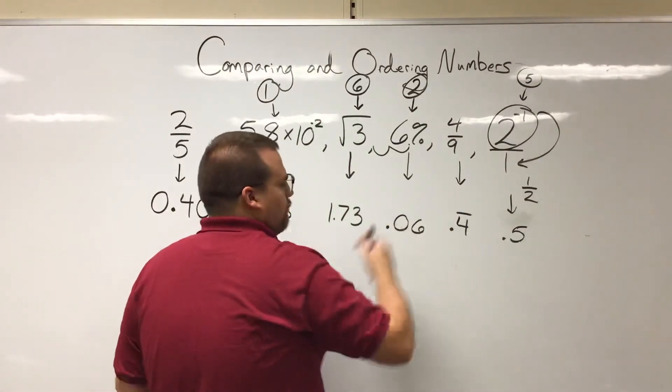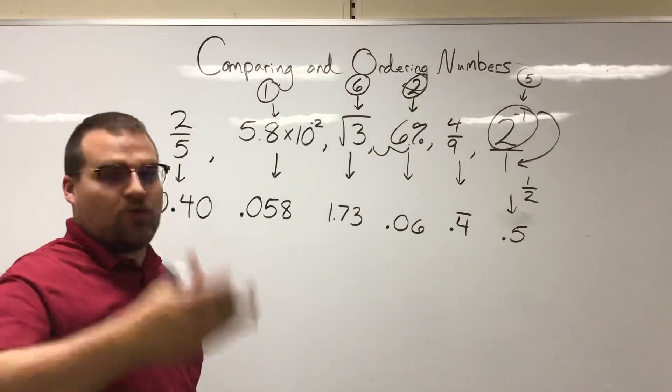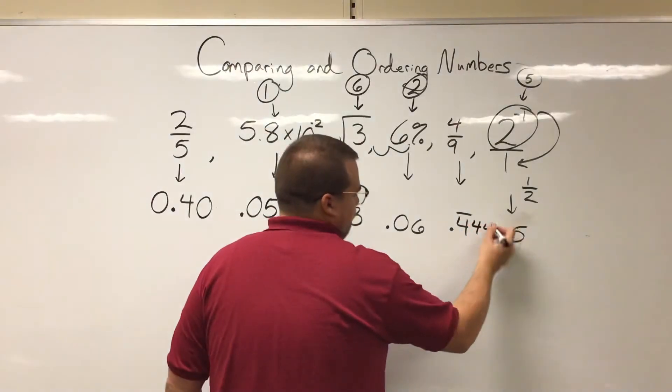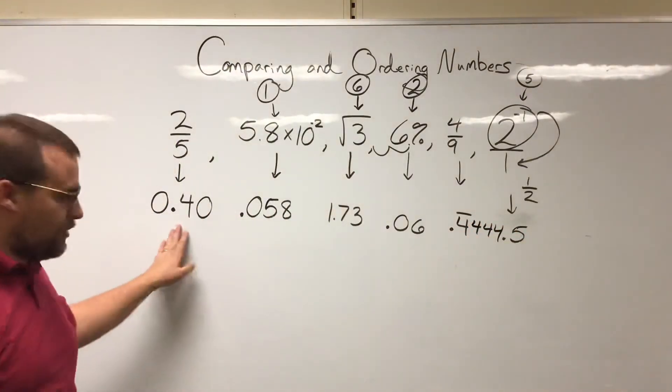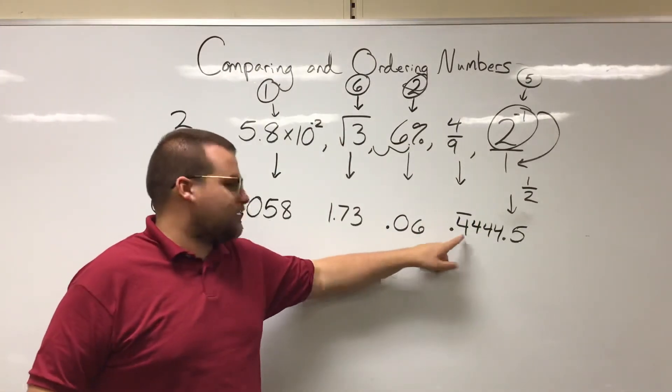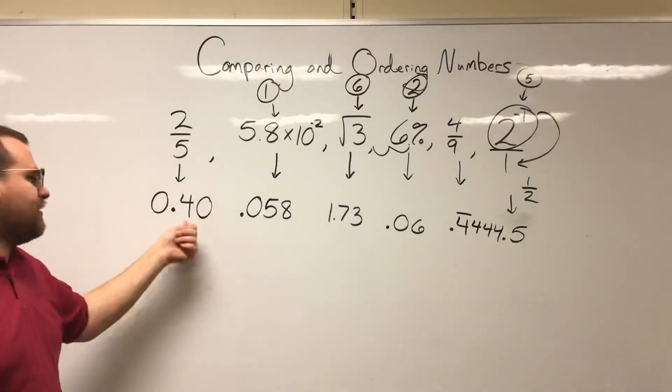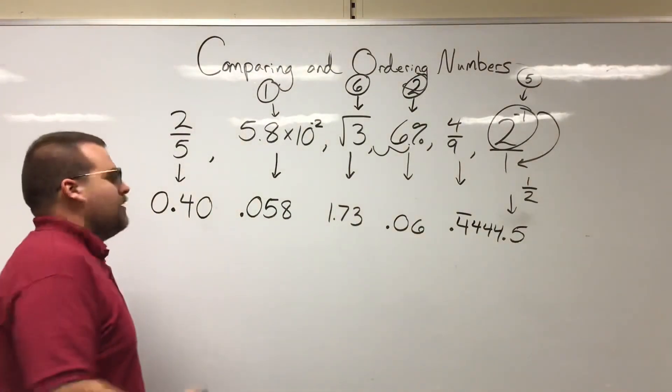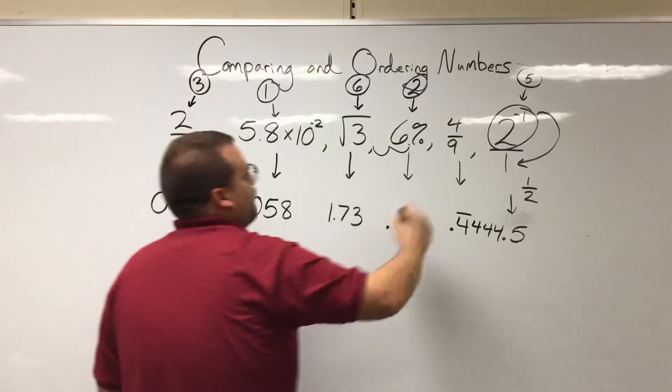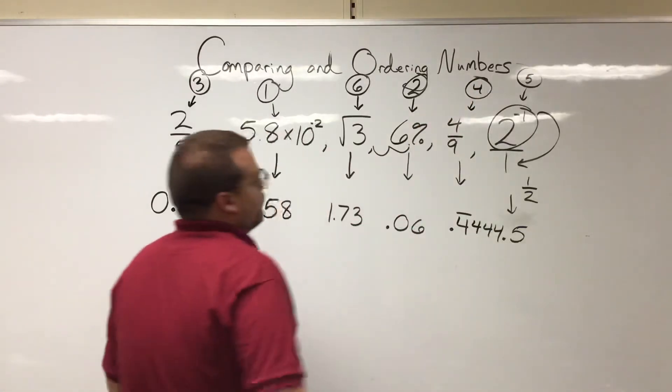But this is 0.4 repeating. And what does repeating mean? It means that it is that over and over and over and over again. It's kind of like 0.4444. So now when you look at these, which one is bigger? Yeah, this one is bigger because 0.4444 is a bigger number than 40. So this one's smaller. This takes our three spot and this would take our four spot.